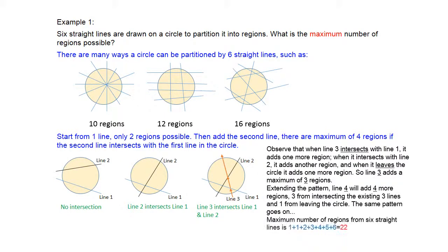By this observation, when line three intersects with line one, then two, and exits the circle, we create three more regions. Extending the pattern by adding a fourth line, we can add four more new regions. Do you see the pattern? Adding line one creates one region; adding the second line creates two more regions; adding the third creates three more new regions.